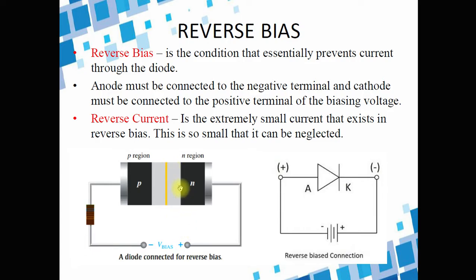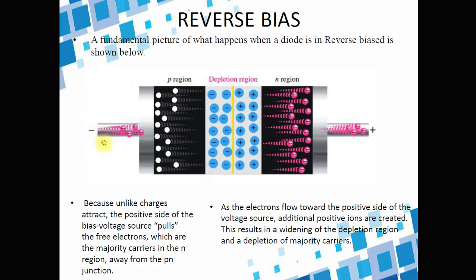The diode can act as a switch: in forward bias, the switch is turned on; in reverse bias, the diode is switched off. The basic use of a diode is as a switch. In reverse bias, we have the negative terminal of the battery on one side and the positive on the other. In the P region, there is a presence of holes, and since the negative terminal repels electrons, they move away. In the N region, where the majority carriers are electrons, they are attracted to the positive side.